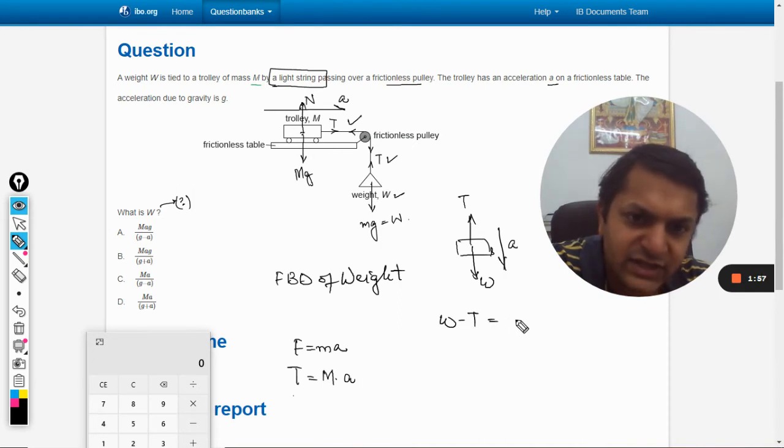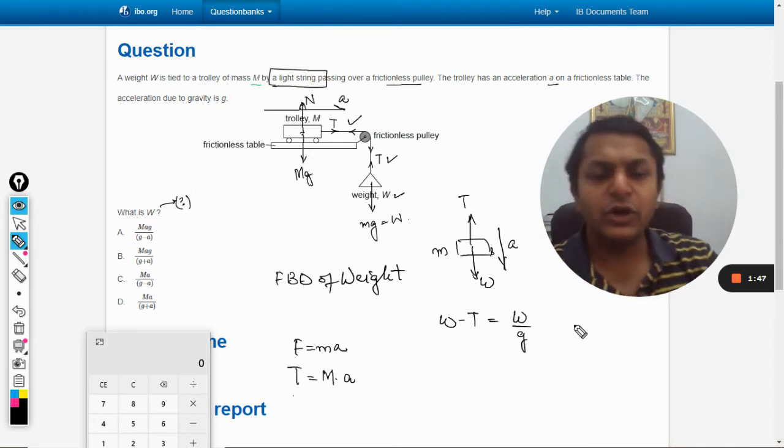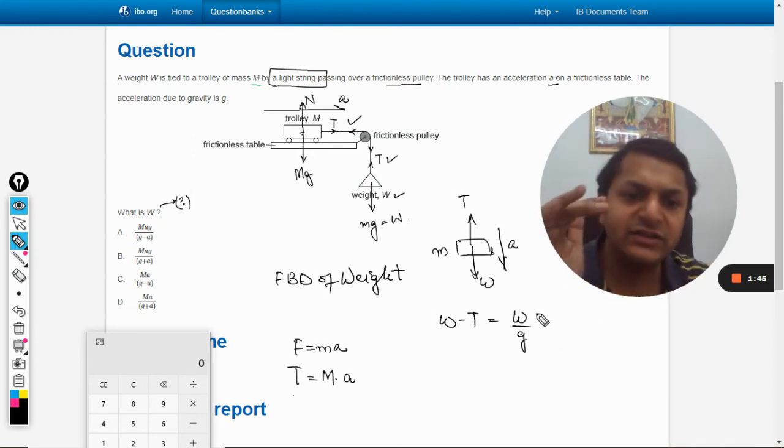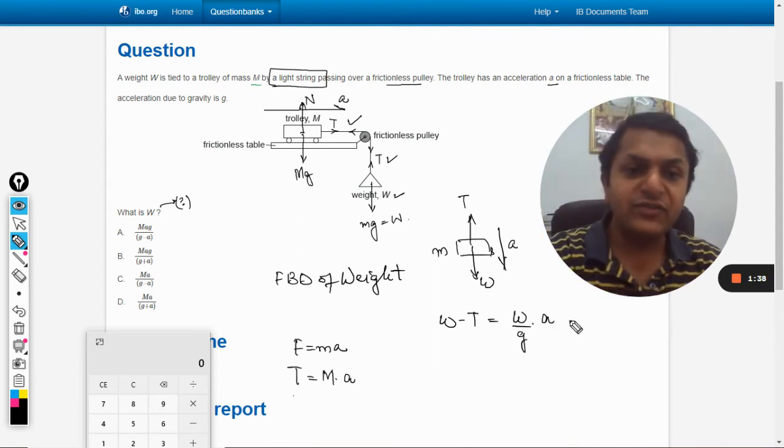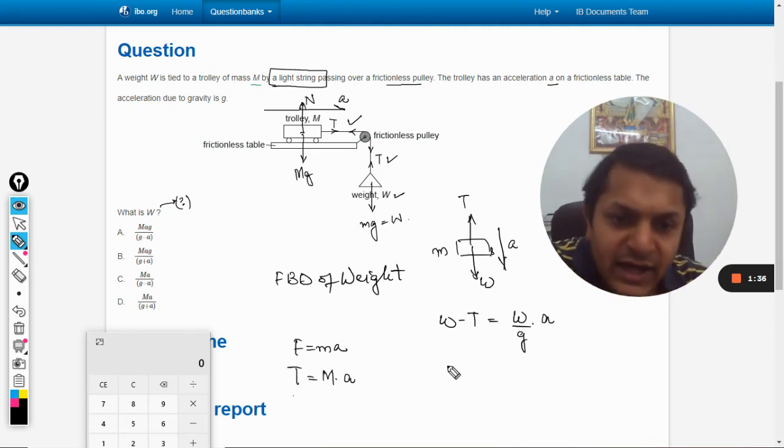So W minus T equals the mass of this body, which is not given, so we can write it as W by g, because weight equals mg. So we can write it as W by g times a is the acceleration with which it is now moving. So F equals m into a once again.